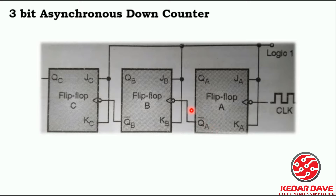We will give QA bar as the output to the clock of the B flip-flop. The same thing will be applied to flip-flop B and flip-flop C. We will provide the clock pulse to the flip-flops in this manner. So let's go for the diagram of this particular down counter.